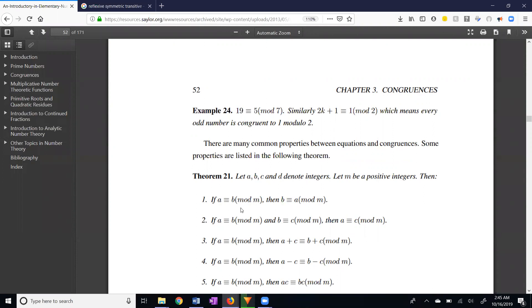Property 1 is the symmetric property. If A is congruent to B mod M, then B is congruent to A mod M. It's transitive. If A is congruent to B mod M and B is congruent to C mod M, then A is congruent to C mod M.